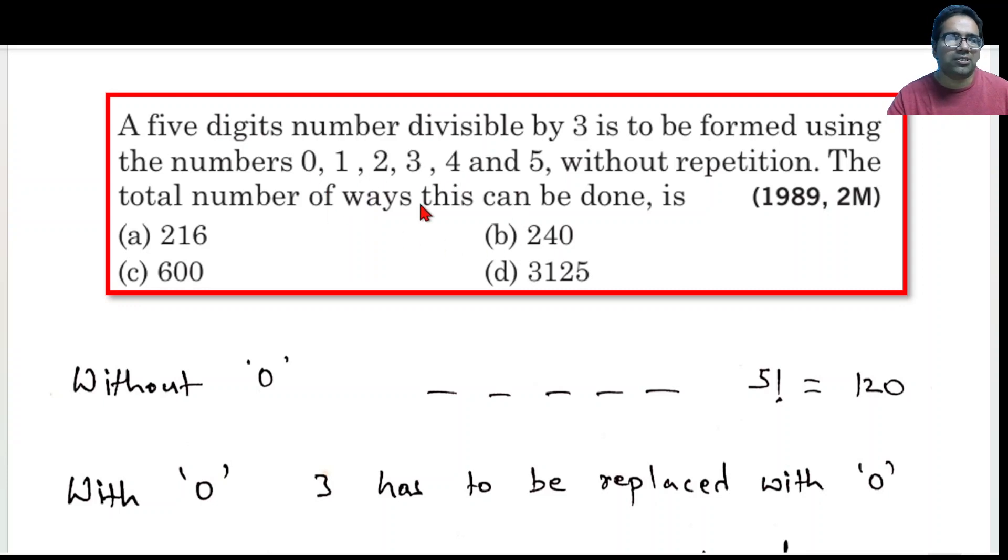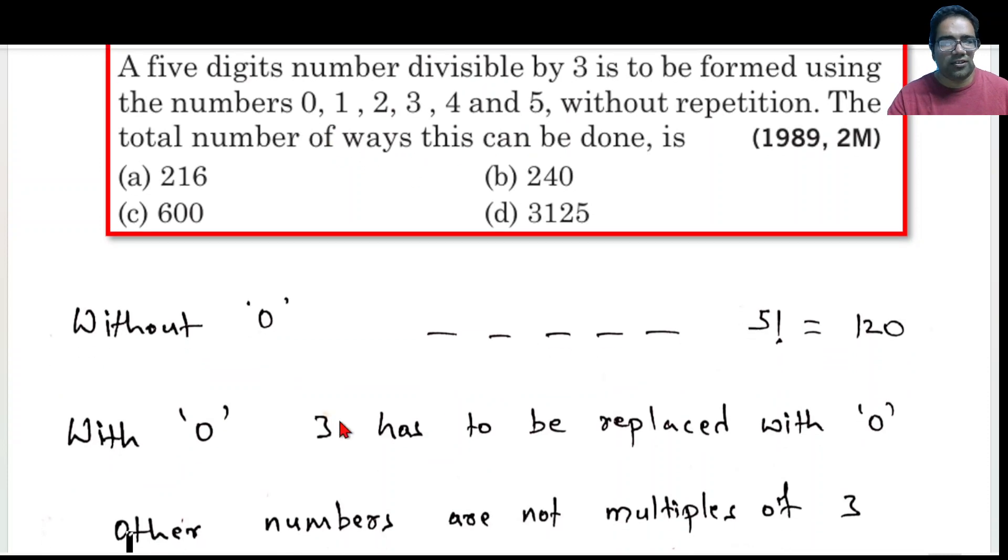But if you remove 2 or 1 or 4 or 5 and put a 0 instead, then the sum will not be a multiple of 3. So if 0 has to be brought in, then only 3 can get out. Nothing else. Please be careful here.